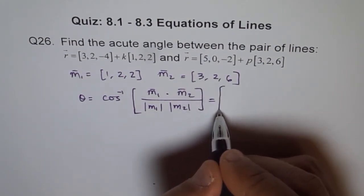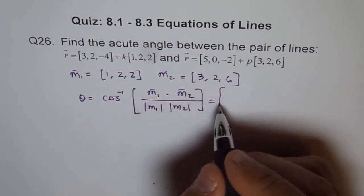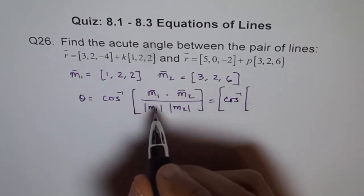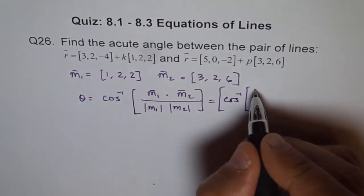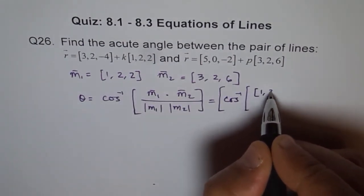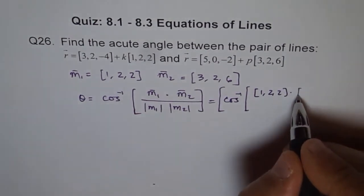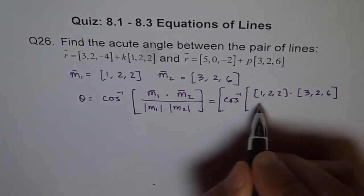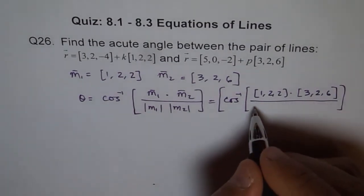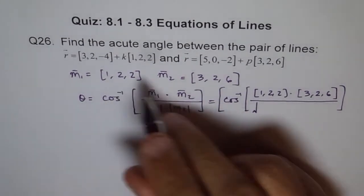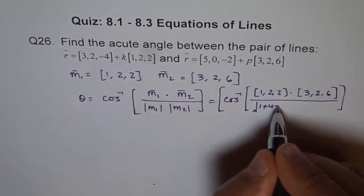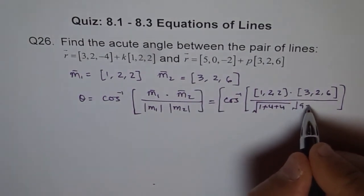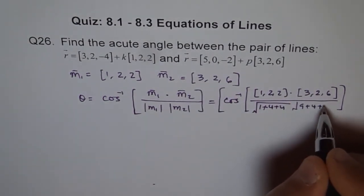Which we can write as cos inverse of (1, 2, 2) dot (3, 2, 6), over the square root of 1 squared plus 2 squared plus 2 squared, times the square root of 3 squared plus 2 squared plus 6 squared.